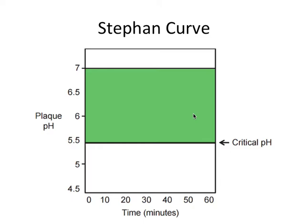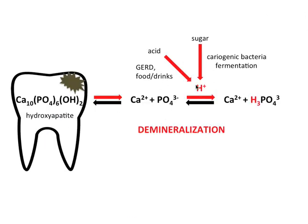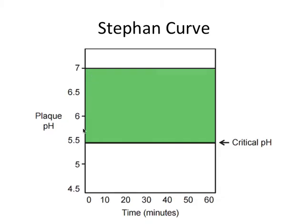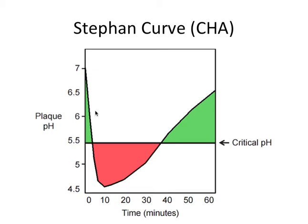Here's the Stephan curve, and this will be central to the rest of our talk. It essentially shows the pH of plaque that covers the tooth — which is central to this equilibrium — and how that plaque pH will change over time, graphed in minutes. Normally the mouth sits at around pH 7, which is pretty neutral. But when exposed to acidic drinks, GERD, or bacteria secreting acid onto the tooth, the pH of plaque covering the tooth decreases rapidly, hitting a minimum within about 5 to 20 minutes.